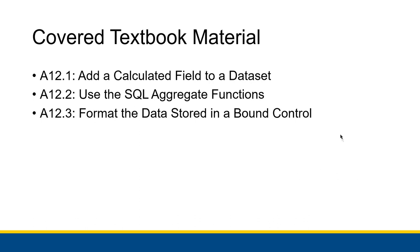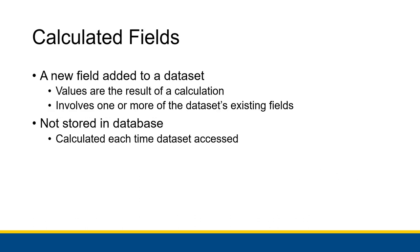I'll be covering everything in the apply section for this chapter. A calculated field is like a new field added to a dataset, but the data in a calculated field is not stored in the database. It's populated by the result of some calculation, like a column in Excel whose value is the result of a formula. It involves one or more of the dataset's existing fields rather than being defined manually in the database. These calculated fields are not stored in the database — they're calculated every time the dataset is accessed.